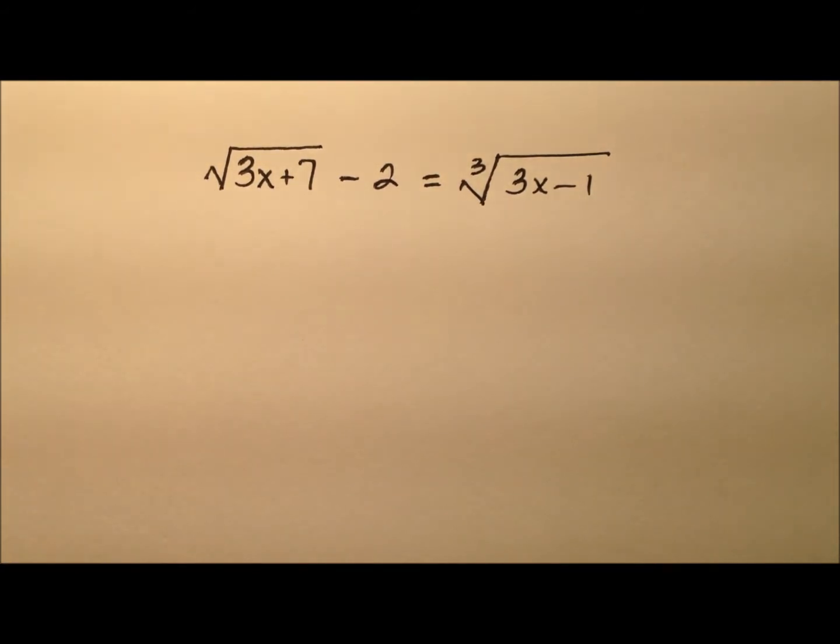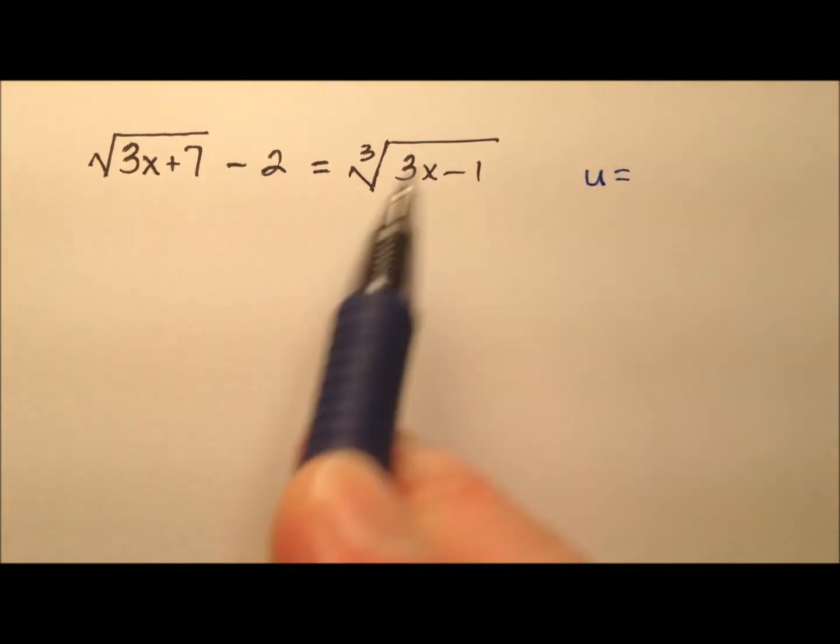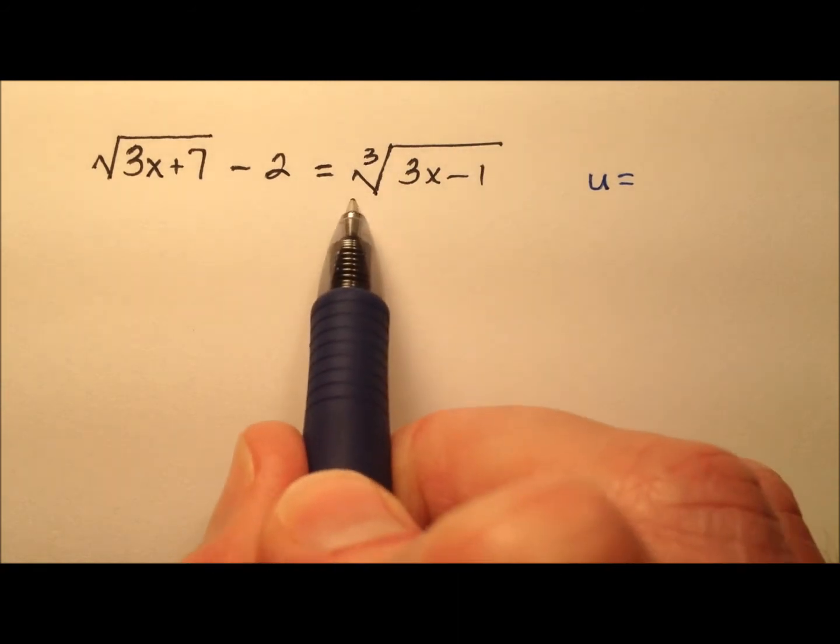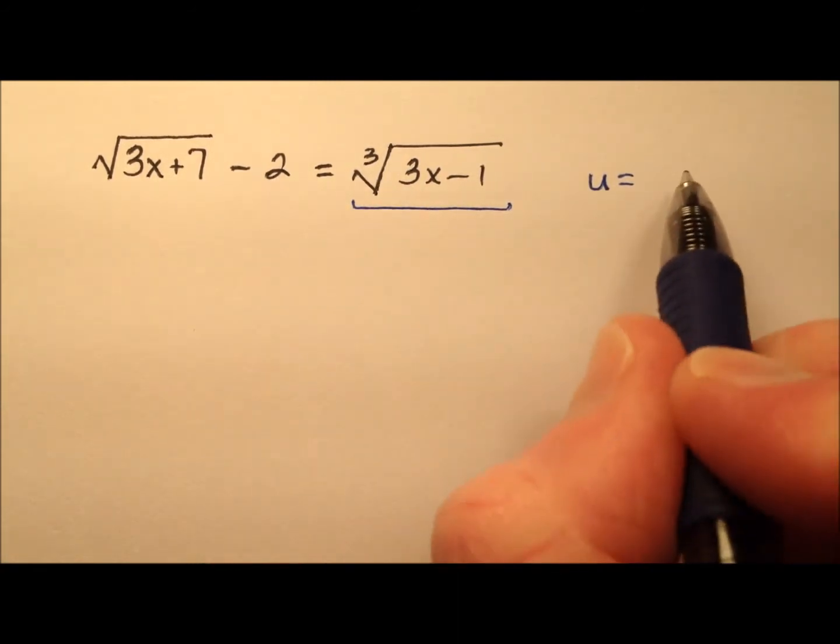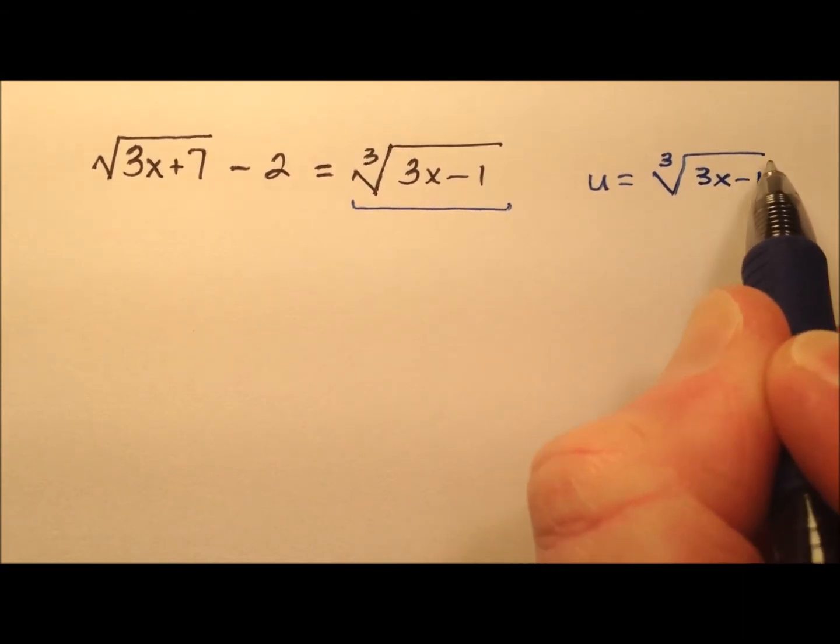Okay, so looking at this problem, I think the best bet here is to use a u substitution and go ahead and get rid of one of these radicals to begin with. So I'm going to say that u equals this entire right side, this cube root of 3x minus 1.